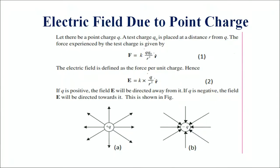R cap is the unit vector directed from the charge to the test charge. By definition of electric field, it is the force divided by the magnitude of test charge, so E is equal to F upon Q naught. Therefore, the expression for electric field is E is equal to K Q upon R square into R cap.